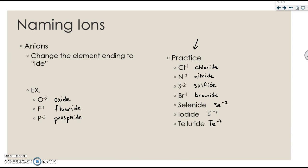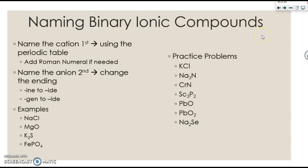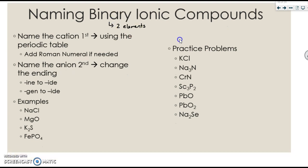Now, let's put it all together. We're first going to start by talking about binary ionic compounds. Binary compounds are ones that are made of only two elements. You always name the cation first using the periodic table and add the roman numeral if needed. Then you name the anion second by changing the ending to -ide. For ionic compounds, we do not have to worry about the number of each element that is present.